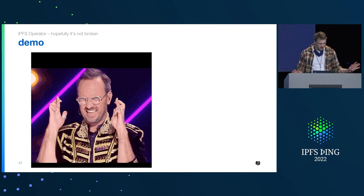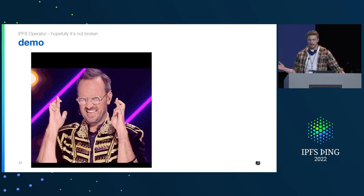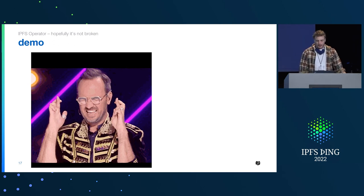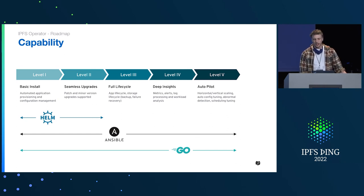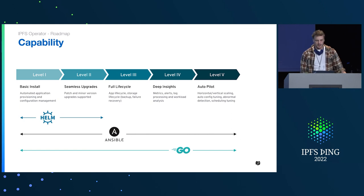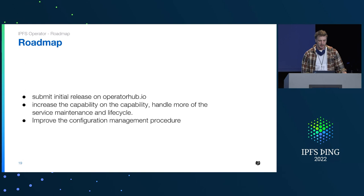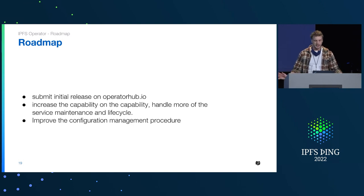Now we're onto the roadmap section. There's a great diagram here for basically how to judge any Kubernetes operator — I think it comes from Red Hat's documentation. We're not all the way up to level five yet. This is still very much in active development — not even really released yet — but we are working our way through to make it more capable and more able to handle the entire lifecycle of the service. All the lists on this capability map are on the roadmap. In the next couple of weeks, we're going to push at least a beta onto operatorhub.io.